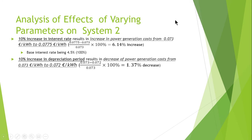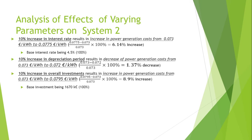Similarly, a 10% increase in depreciation period will result in a 1.37% decrease in the power generation cost. A 10% increase in overall investment will basically increase power generation cost by 8.9%.